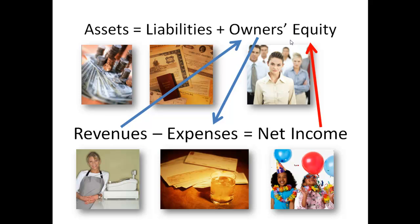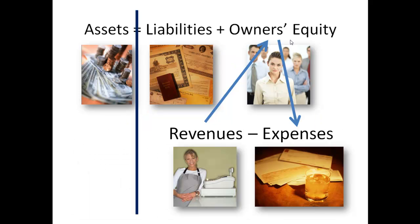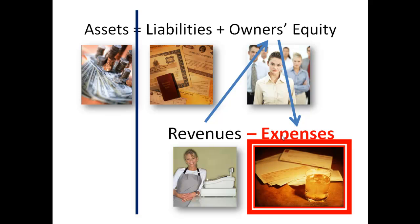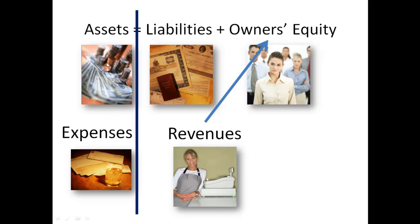We could rearrange all of this like so: assets on one side, liabilities and owner's equity on the other, where revenues flow into owner's equity and expenses come out of owner's equity. If I want to express this without a subtraction, I can simply move expenses to the left side, so that assets and expenses equal liabilities, owner's equity, including revenues.